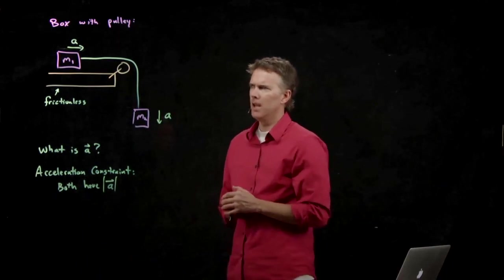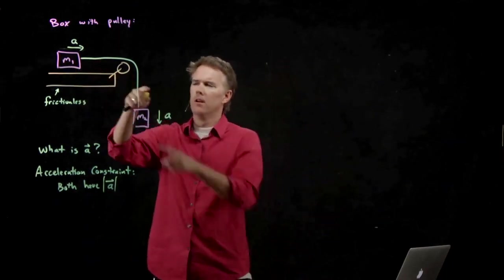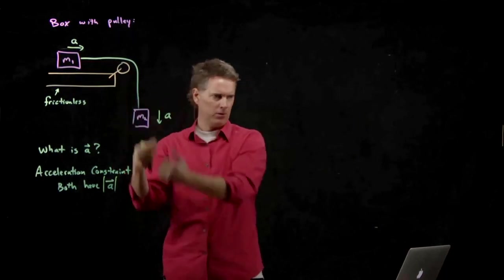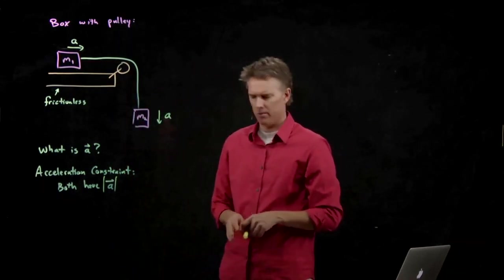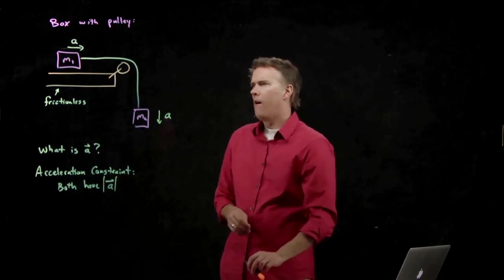If M1 accelerates to the right, that rope tells us that M2 is going to accelerate down with the same acceleration A.